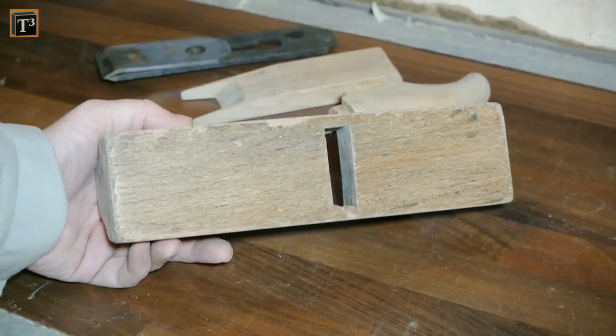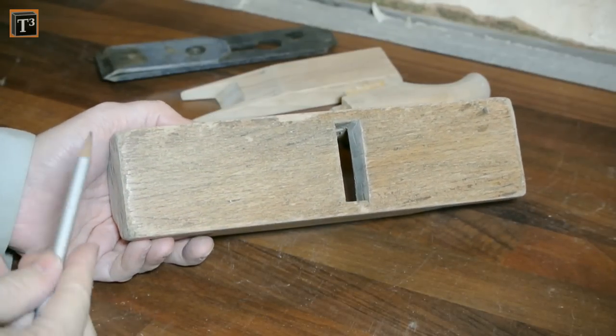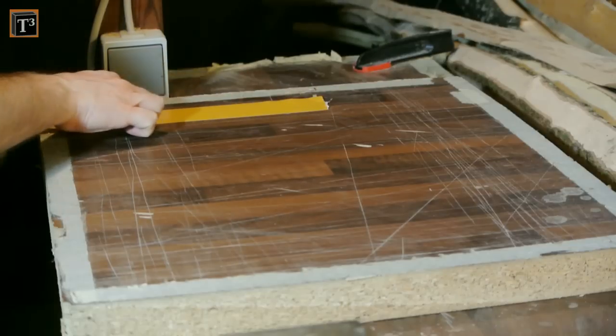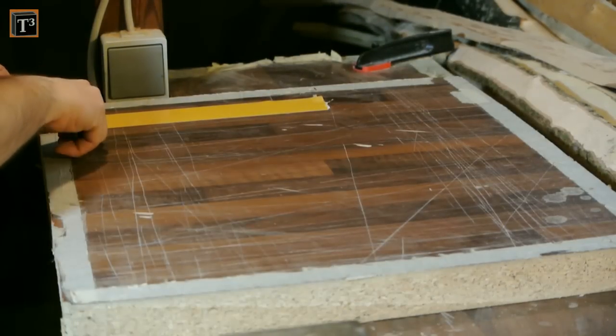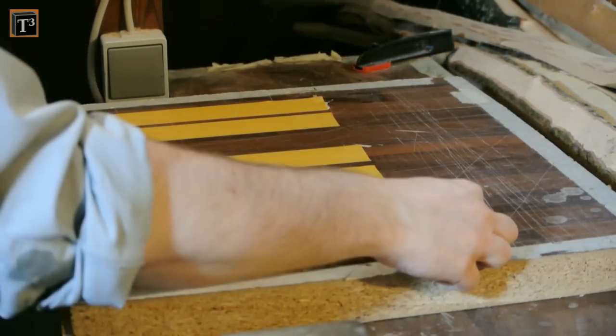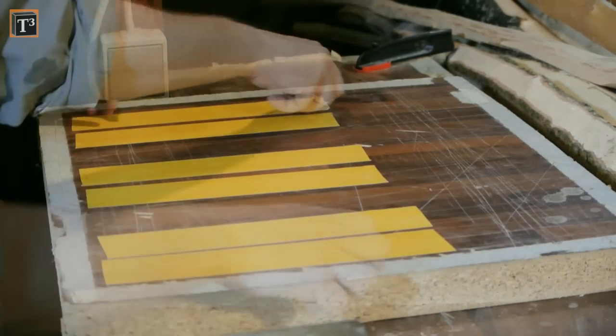First I need the old sole leveled. Therefore I mark it with a pencil. That way I can see which parts are still low after grinding. What I need for this job is a flat surface. I just use this junk piece of a kitchen board.